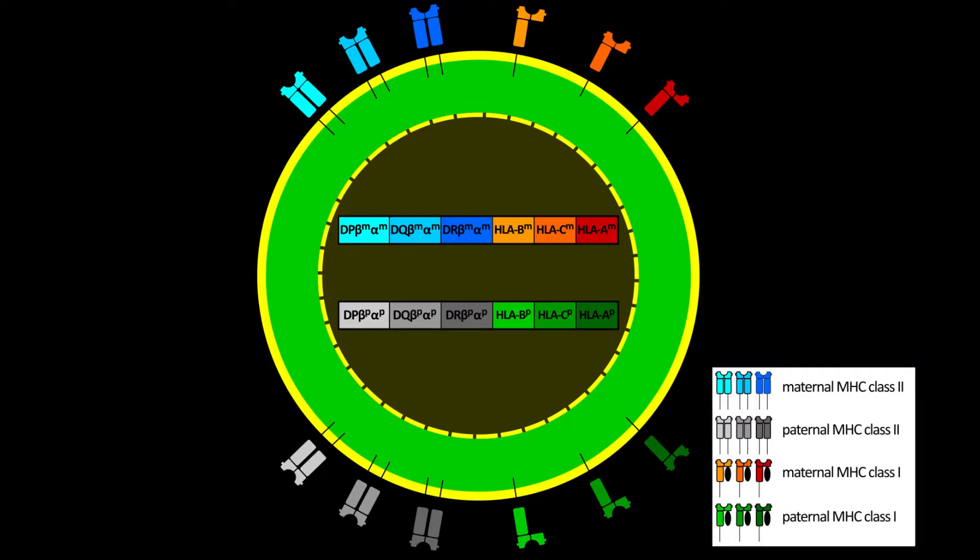You do inherit all of your genes from your parents, so the MHC markers on your cell surface are actually a combination of mom and dad. So whatever markers they have, you'll have a 50-50 combination of them on your cells.